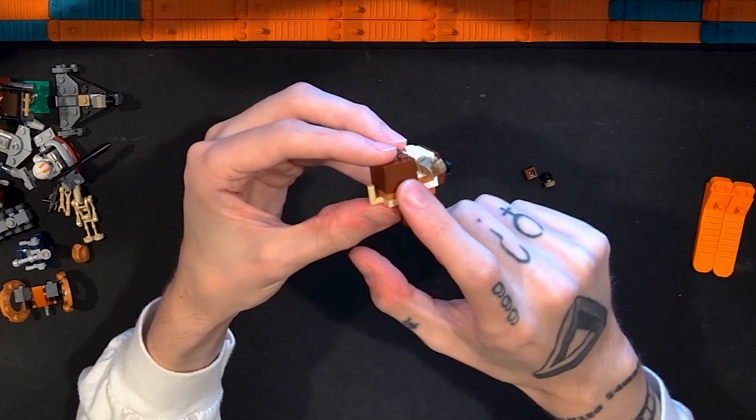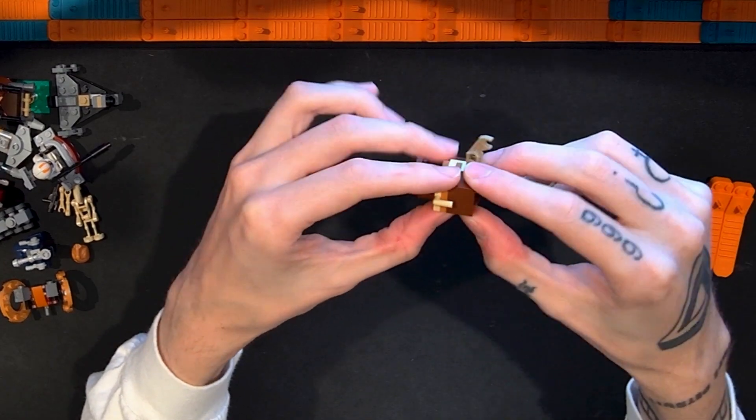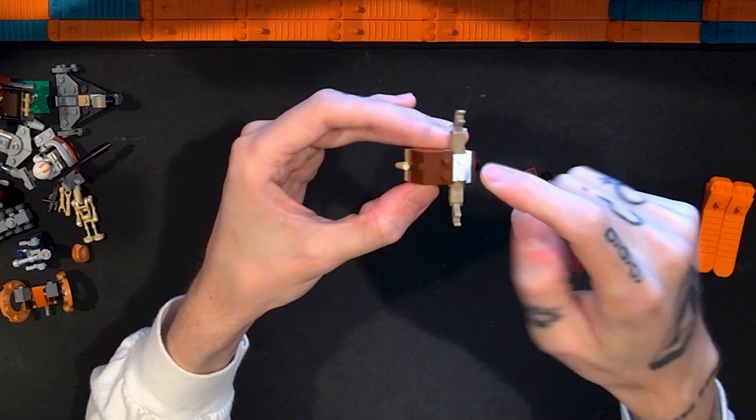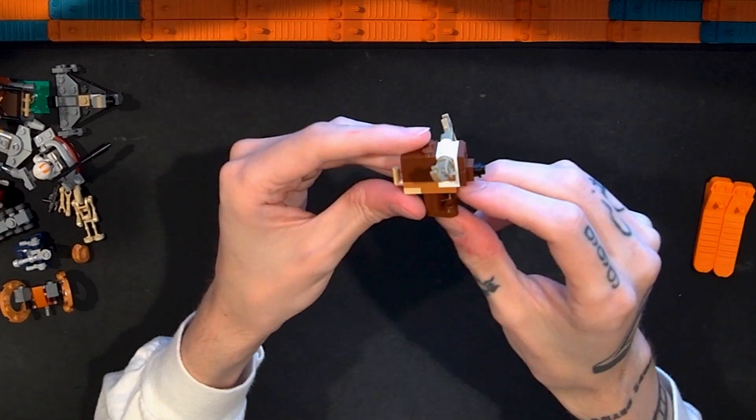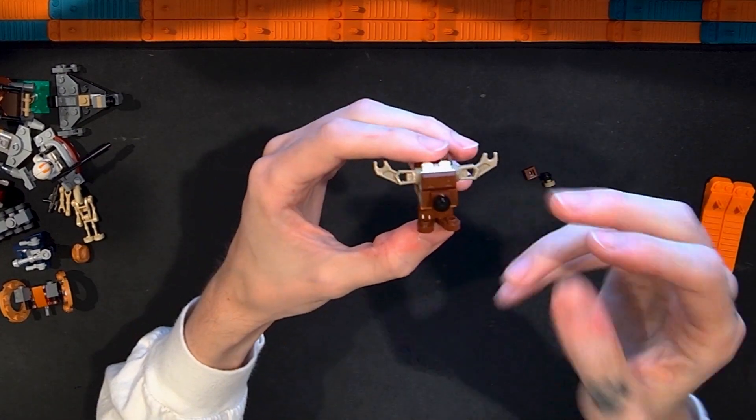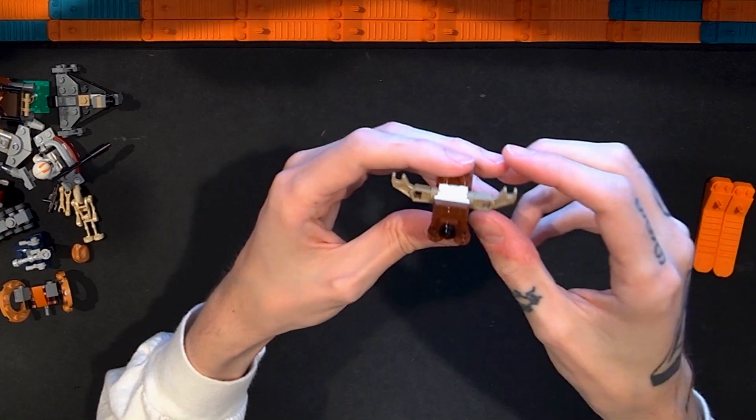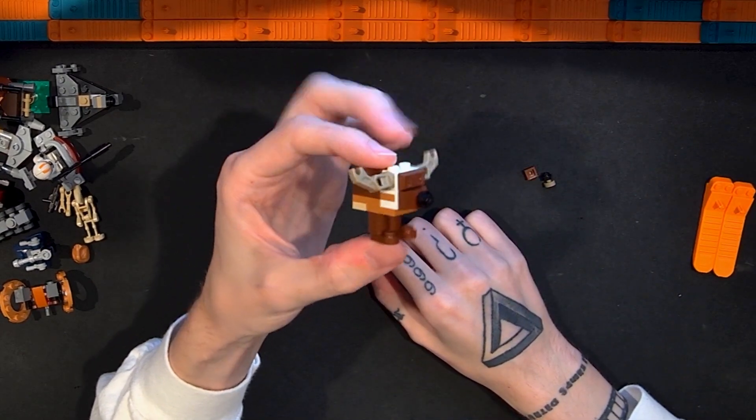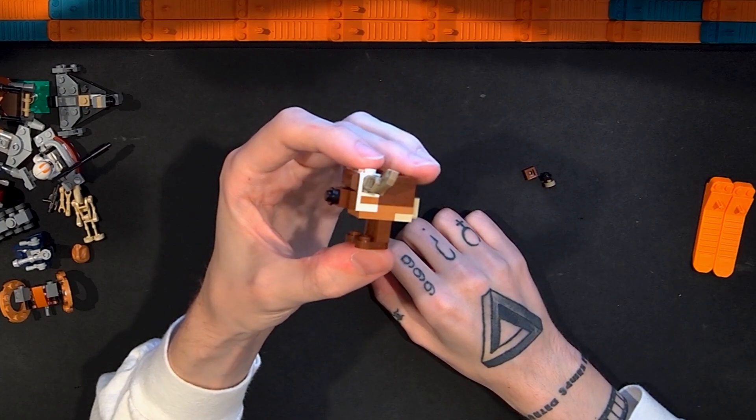This one uses a solid two by two brick here. Would have been interesting if they used a different piece there so you could open this up and potentially put something in there, which I don't know if is canon for gonk droids. But this is a pretty cute, pretty fun build. Color choices are good.